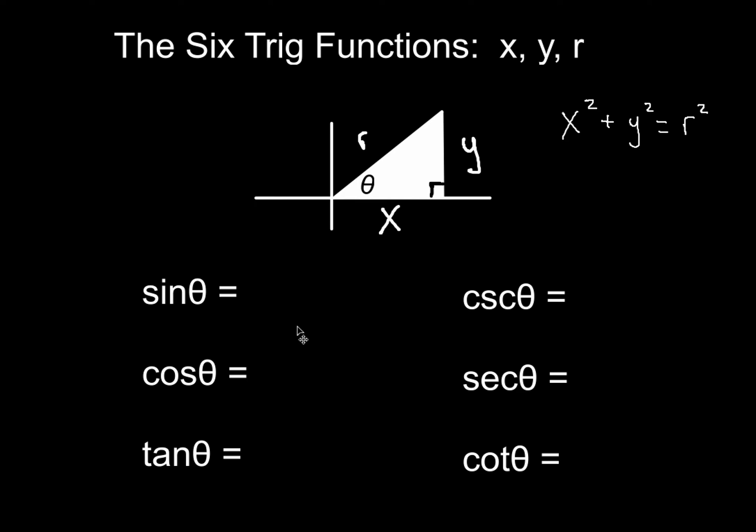sine was opposite over hypotenuse, which in this case is y over r. Cosine is adjacent over hypotenuse, which is x over r, and then tangent, of course, would just be y over x.